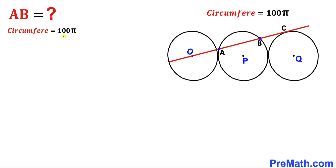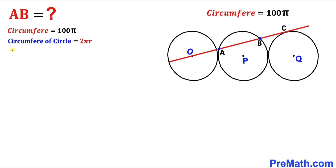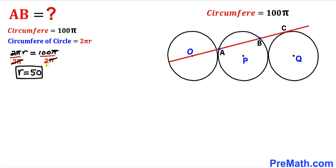The circumference given is 100π. Recalling the circumference formula 2πr, we set 2πr = 100π and divide both sides by 2π to isolate r. The radius r turns out to be 50 units — that is the radius of each of the three circles.